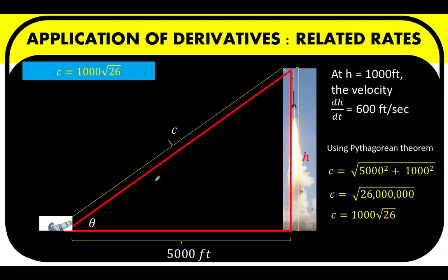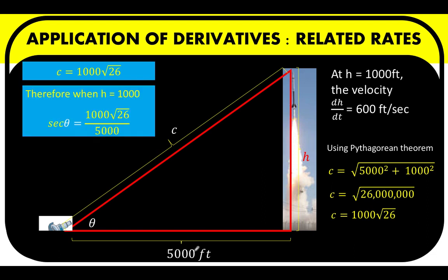First, we need to recall what is secant theta. Secant theta is the inverse of cosine theta. So if cosine is adjacent over the hypotenuse, the secant is the hypotenuse over the adjacent side. So here, our secant of this angle theta is equal to this hypotenuse c, which we computed to be equal to 1,000 square root of 26 when the velocity was 600 feet per second. And the adjacent side is 5,000 feet.